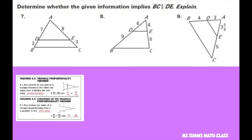Hi everyone, we're going to determine whether the given information implies that BC is parallel to DE, using the converse of the triangle proportionality theorem. Basically, if our sides are proportional, it means these sides here, then these lines will be parallel.